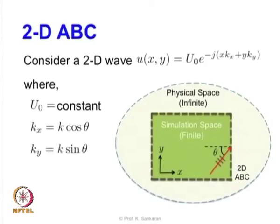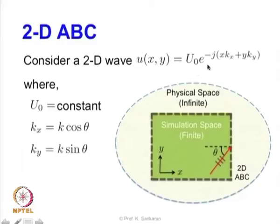We are going to see how we can extend this idea to a two dimensional case, and that will be the focus of this module. Let us start with a two dimensional problem where we have a 2D wave equation given by u of x, y. So u is going to have x and y dependence, and u0 is the magnitude of u, and e to the power minus j(x·kx + y·ky) is the spatial dependence in the x and y direction.